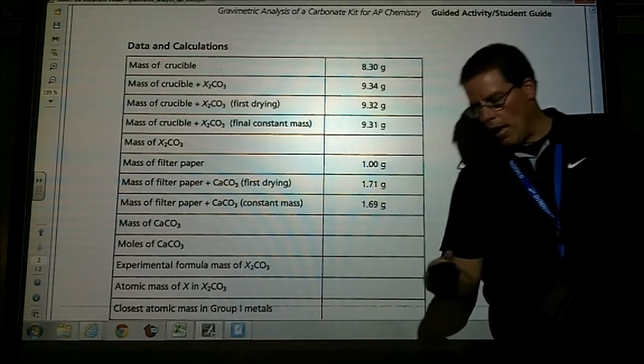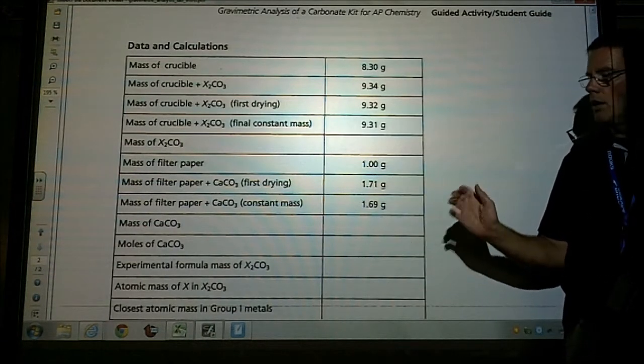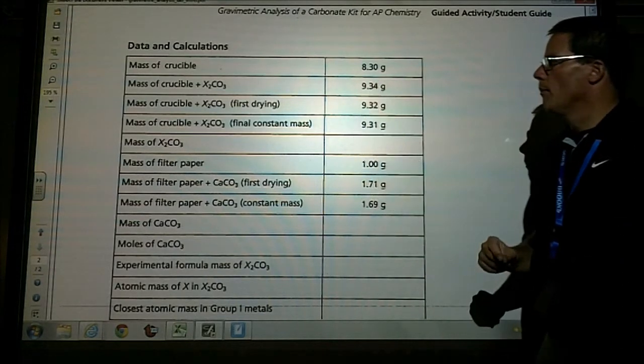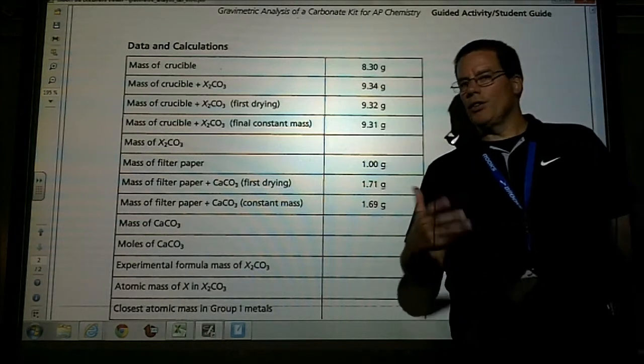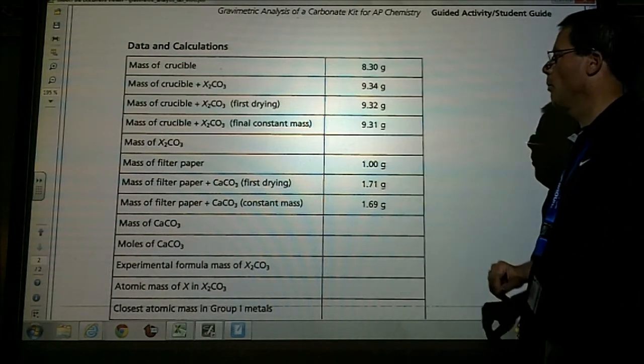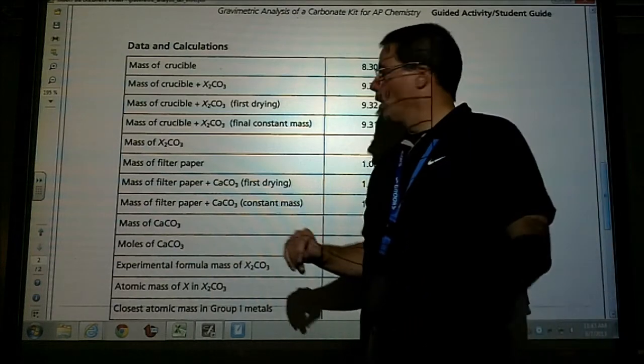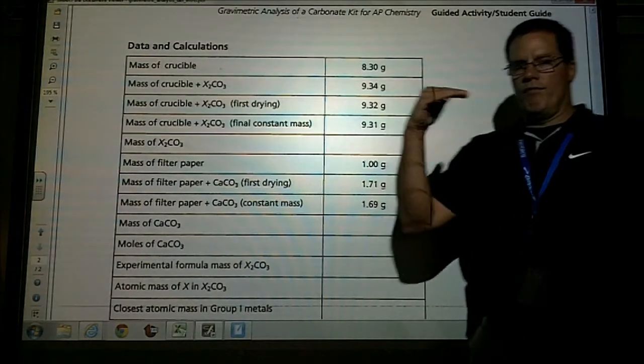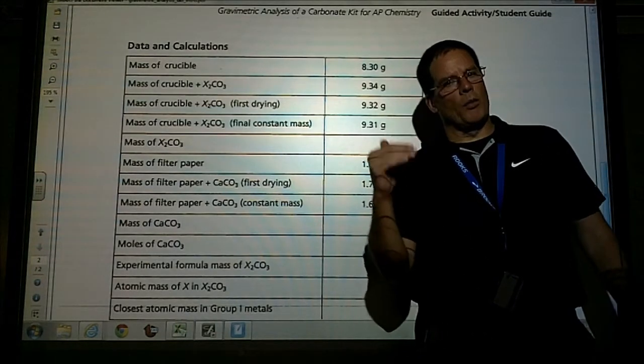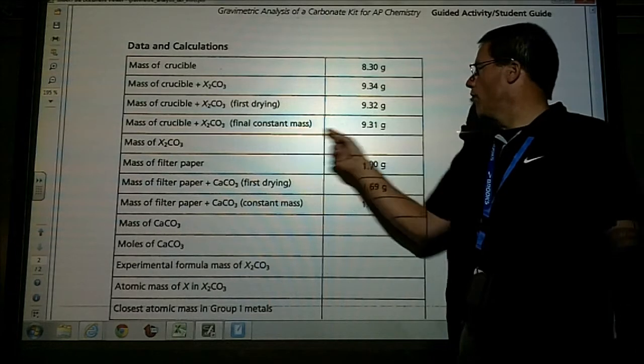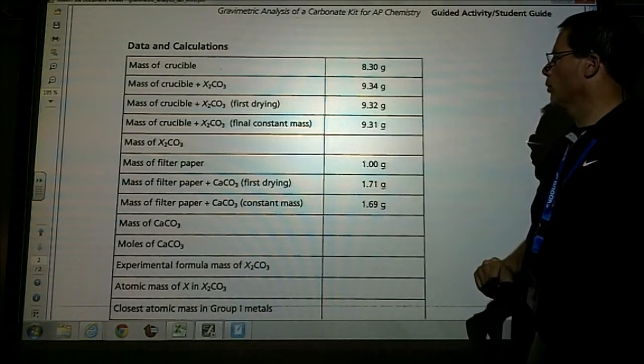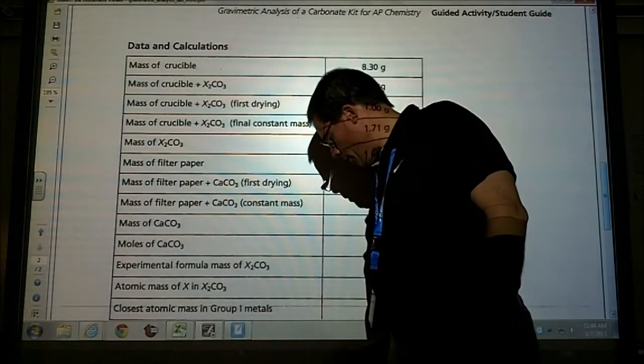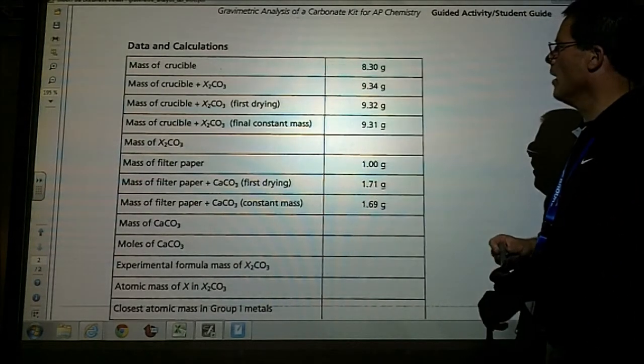The mass of the evaporating dish and then the mass of the unknown compound after the first drying. We're going to apply heat underneath the evaporating dish with the compound in there, nice and gentle. We're not going to cook this thing. You'll notice that the mass went down because this compound is a hydrate, some form of a hydrate. We don't know what type it is yet, so we want to evaporate all the water off first.